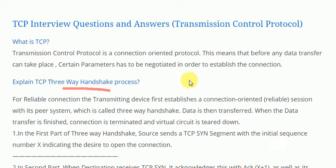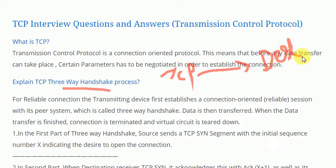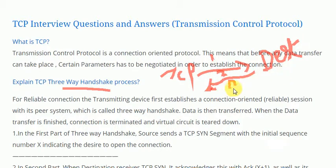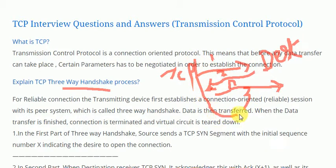The next question is: explain the TCP three-way handshake. As the name suggests, it is a three-step process. First, TCP initiates by sending a message to the destination. The destination sends back that message with an acknowledgement. Then TCP receives that acknowledgement and sends a final confirmation back to the destination, establishing the connection.